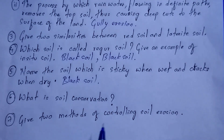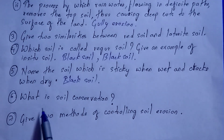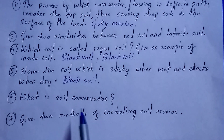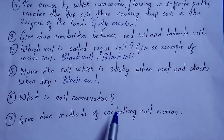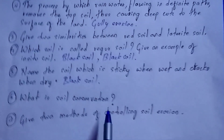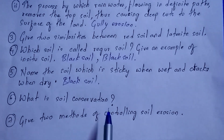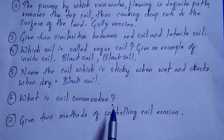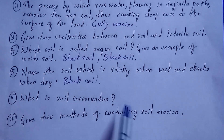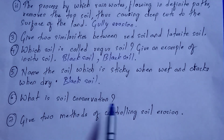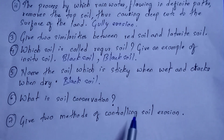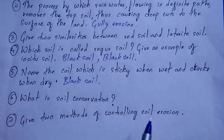Question number six: what is soil conservation? Soil conservation is the prevention of soil erosion, reducing the rate of erosion, and checking soil degradation. You can also write your own definition.